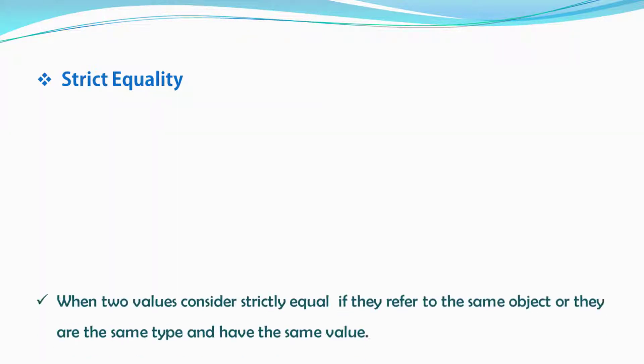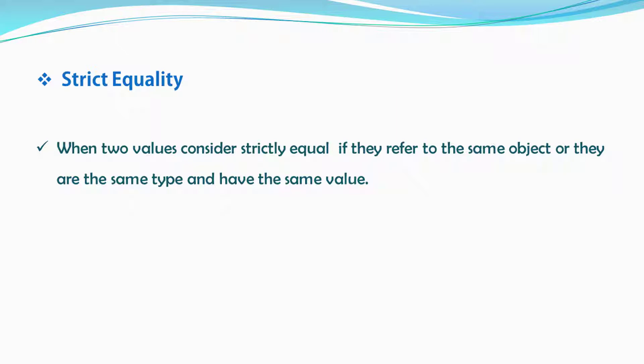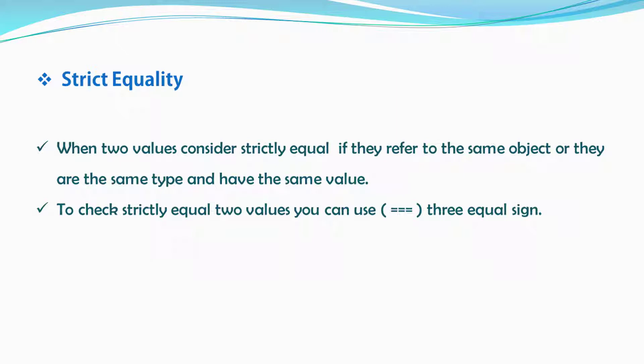So what is strict equality? Two values are considered equal if they refer to the same object, or they are the same type and have the same value. I personally recommend you to use strict equality when you are comparing two values. We will also take a look at the benefit of using strict equality rather than abstract equality.